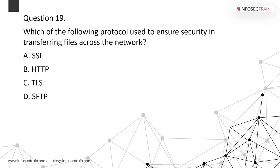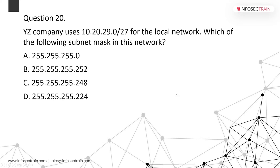Which protocol is used to ensure security in transferring files across the network? By the name itself we can identify it — SFTP (Secure File Transfer Protocol). A company using the network 10.20.29.0/27 — the corresponding subnet mask is 255.255.255.224, which corresponds to /27.